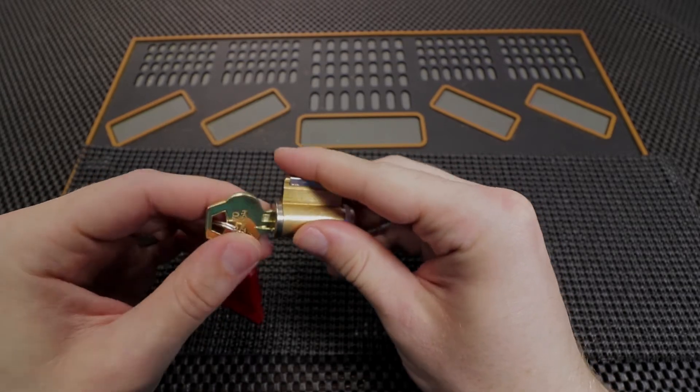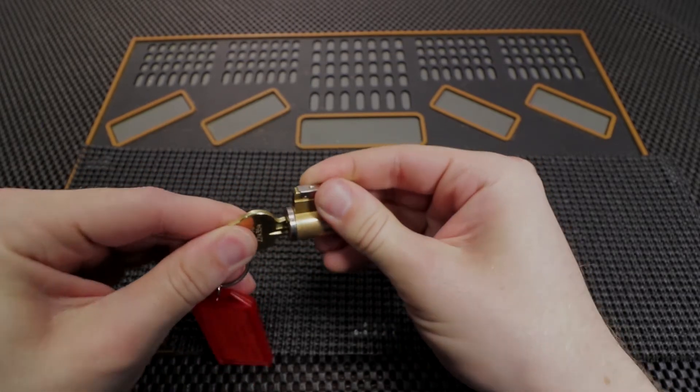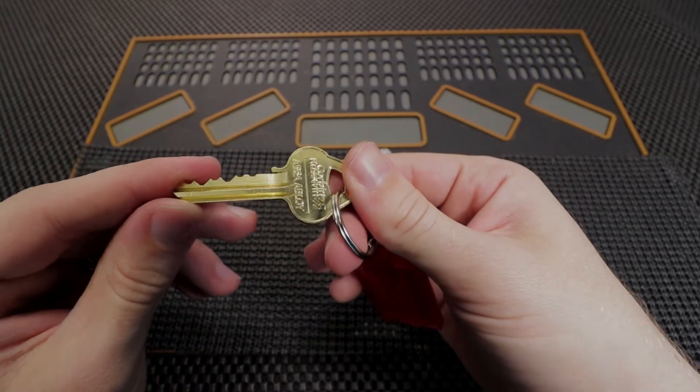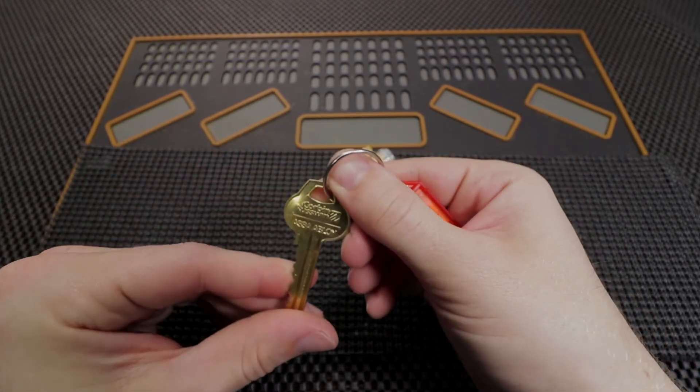So this is a 6-pin Corbin Rustwin kick cylinder. It operates very well. It offers you a fairly decent challenge when you want to pick it, and here is the key.